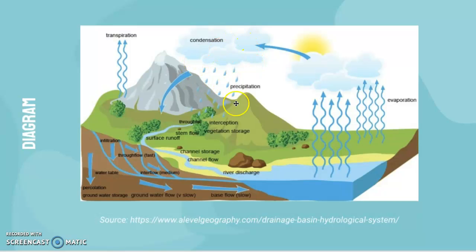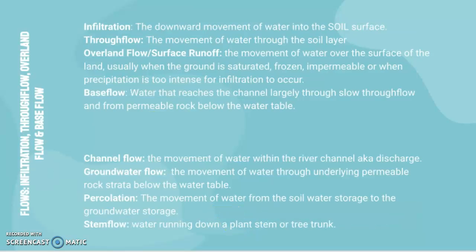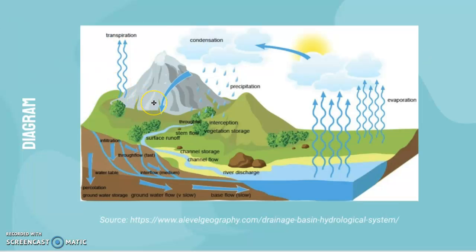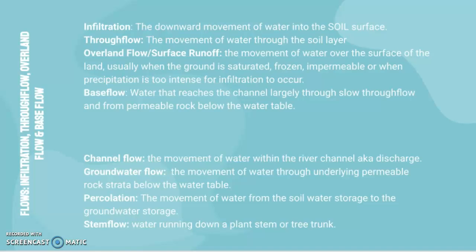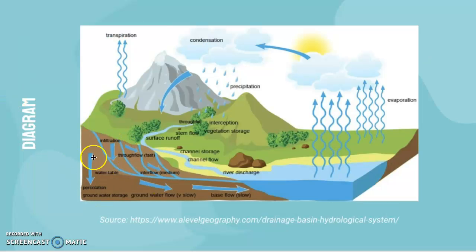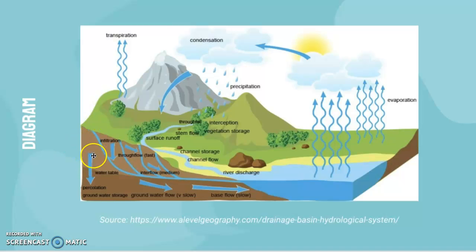Precipitation is the main input coming into the drainage basin. Now we'll look at flows: infiltration, through flow, overland flow, and base flow. Infiltration is the downward movement of water into the soil surface. Through flow is the movement of water through the soil layer. The water table sits above the groundwater store, so soil moisture is above the water table and groundwater is below — make sure you know the difference between those two.